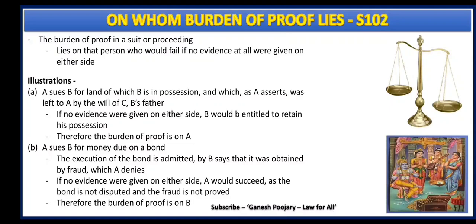Then comes section 102, which discusses on whom the burden of proof lies. The provision says the burden of proof in a suit or proceeding lies on that person who would fail if no evidence at all were given on either side. For example, A says the land in the possession of B is mine. The court asks A for evidence. A produces a document showing he is the owner. Now the burden of proving the next fact falls on Mr. B — he has to say the document is not right or is fraudulent. If B says nothing, A wins the case.